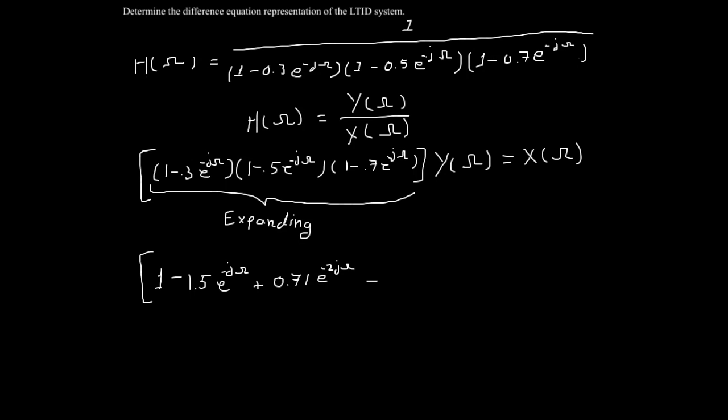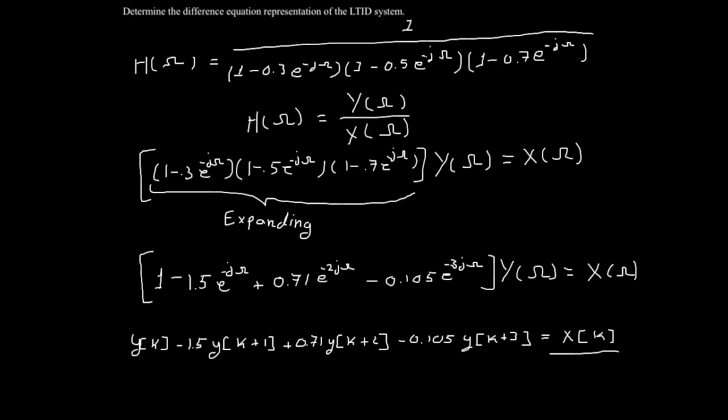Rearranging H of omega in terms of Y of omega and X of omega, and multiplying out the appropriate terms, we can find the difference equation by taking the inverse Fourier transform of this expression, yielding the final result in terms of Y of k and X of k.